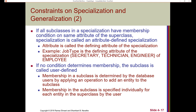And we have an attribute-defined specialization. If no condition defines membership, then the subclass is called user-defined. Membership in a subclass is determined by the database user by applying an operation to add an entity to the subclass, done on a case-by-case basis. So membership in the subclass is specified individually for each entity in the superclass by the user.